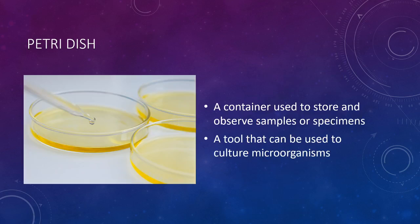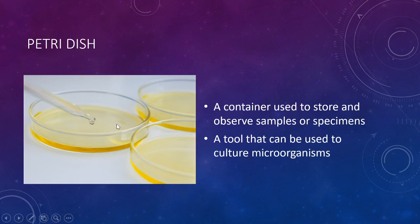Next we have a petri dish. This is a container used to store small samples of specimens. We can also use it to grow cultures of microorganisms. You would put an agar — that yellow gel-like substance — into the dish, place your specimen on there, and put it into a special place to grow. Over time you would see microorganisms or molds growing on the agar.